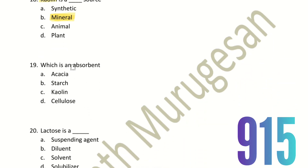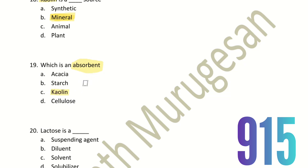Nineteenth question: Which is an absorbent? The choices are Acacia, Starch, Kaolin, and Cellulose. Kaolin has an absorbent property. Hence, the right answer is option C — Kaolin.